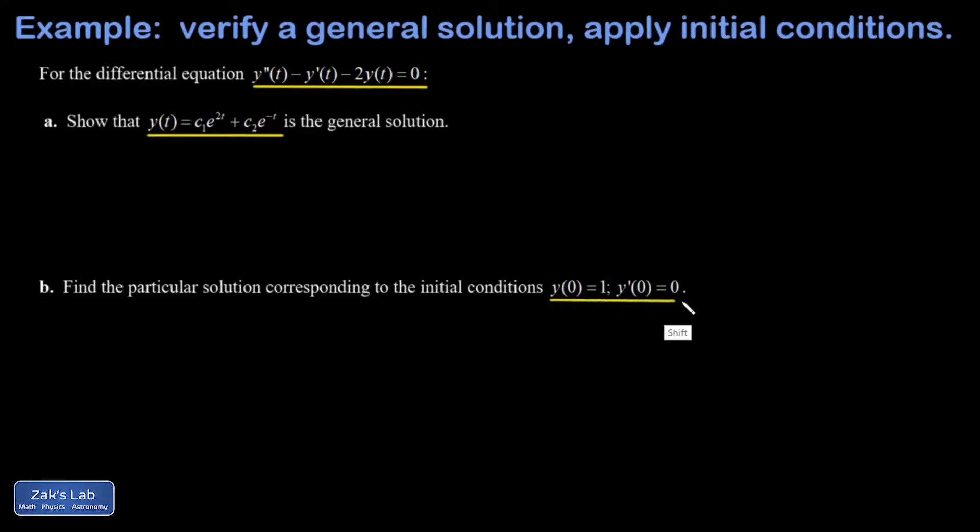And then in part B, we're given two initial conditions that should allow us to nail down those two constants and find the particular solution. So to show that something is a general solution, you just run it through the differential equation.